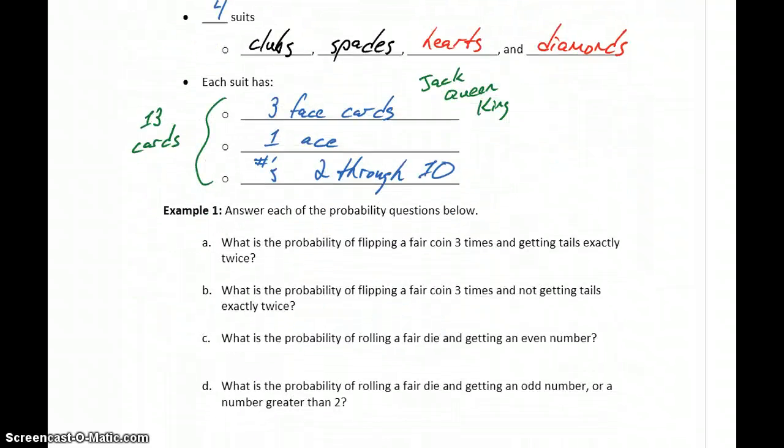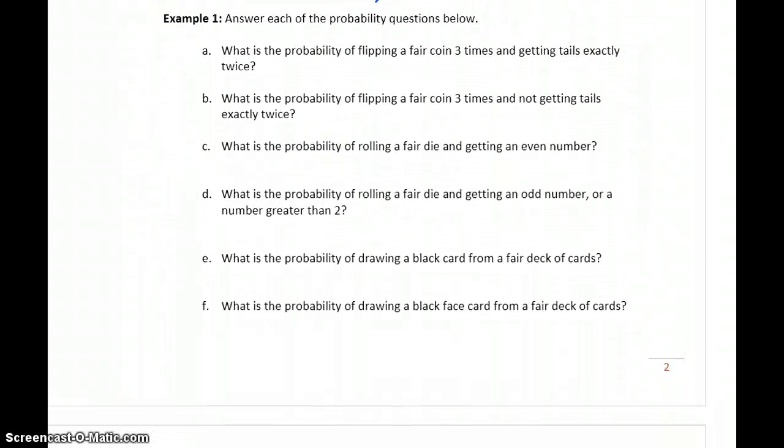So let's use those definitions of what we mean by fair for each of those different items and answer some different probability questions. So first, what's the probability of flipping a fair coin three times and getting tails exactly twice? So to answer this question, we need to first construct a sample space. So we're gonna flip a fair coin three times. We need to list the different possible outcomes.